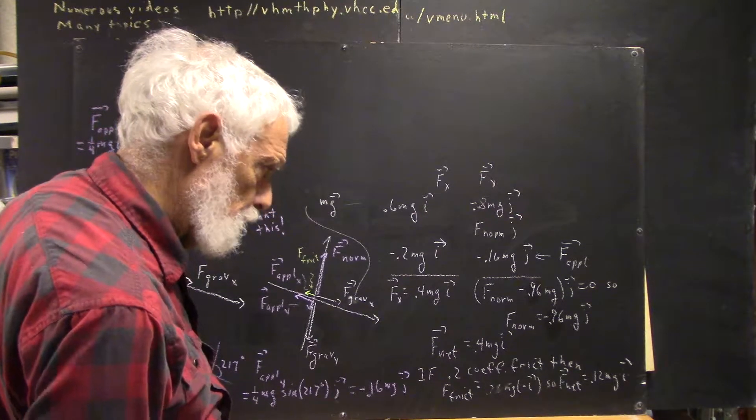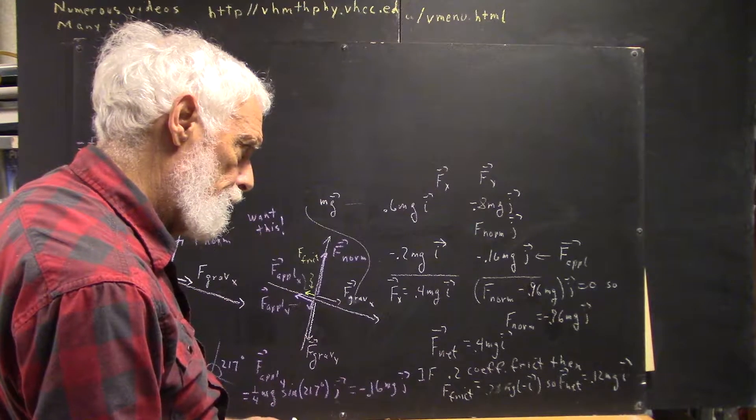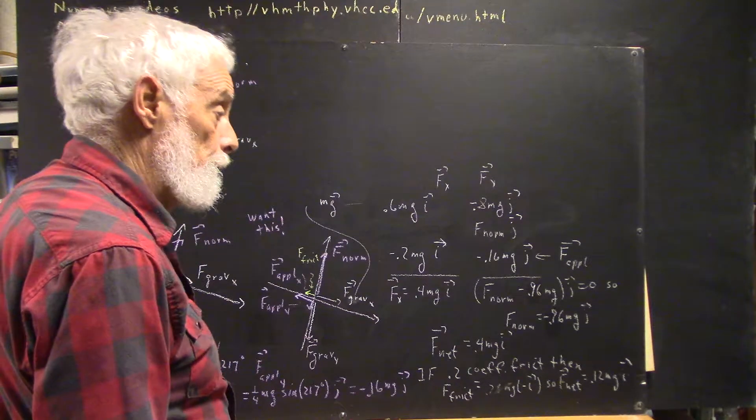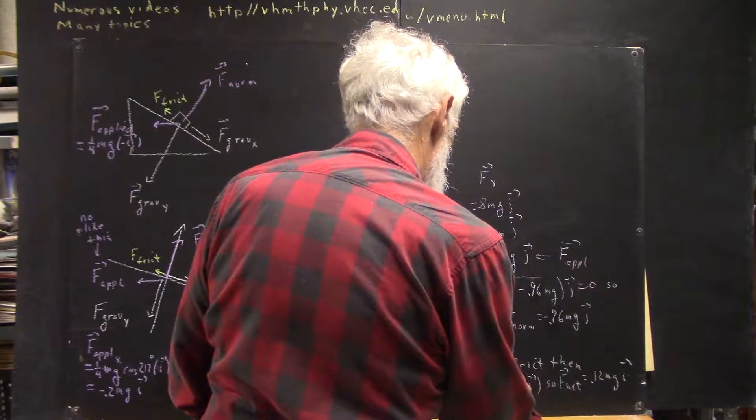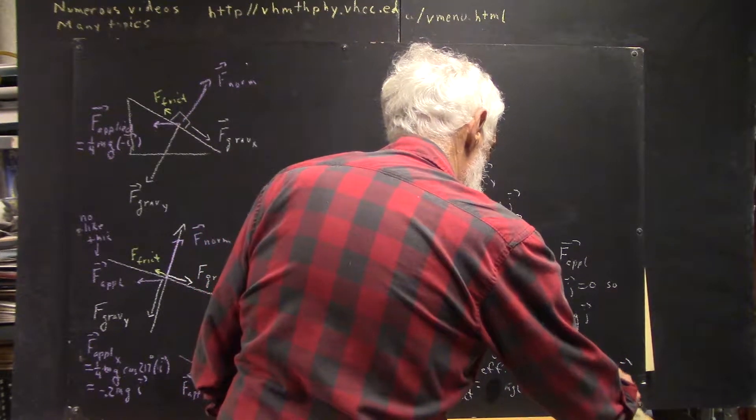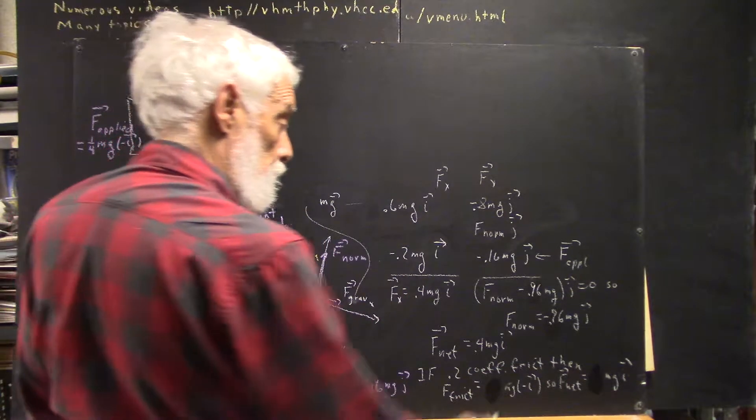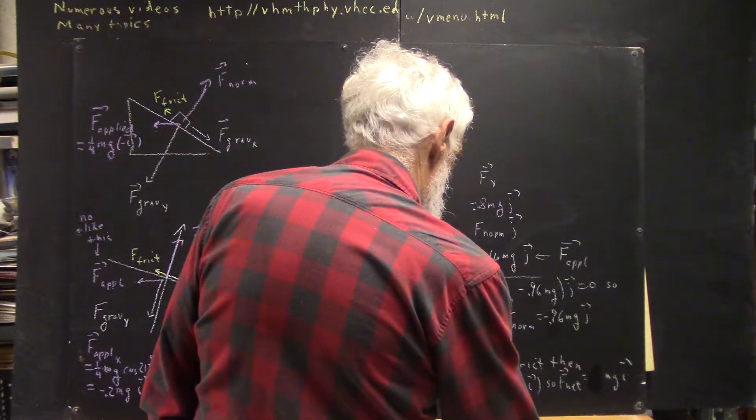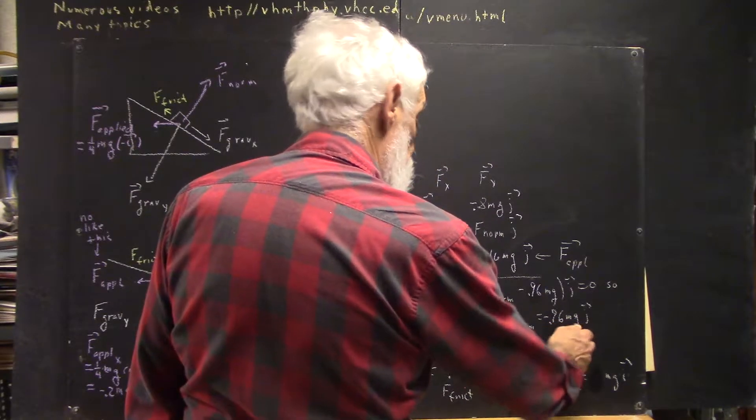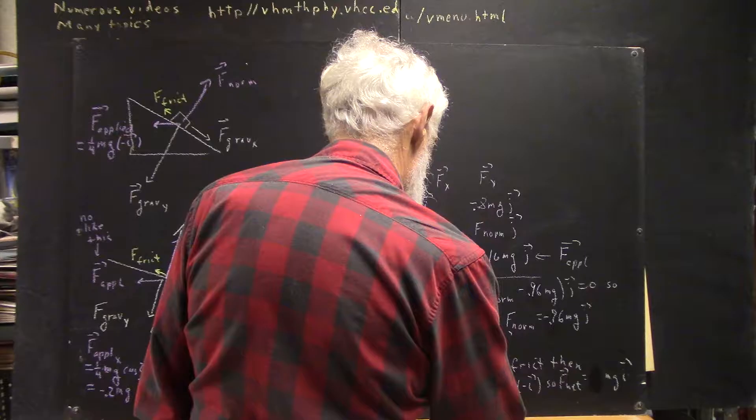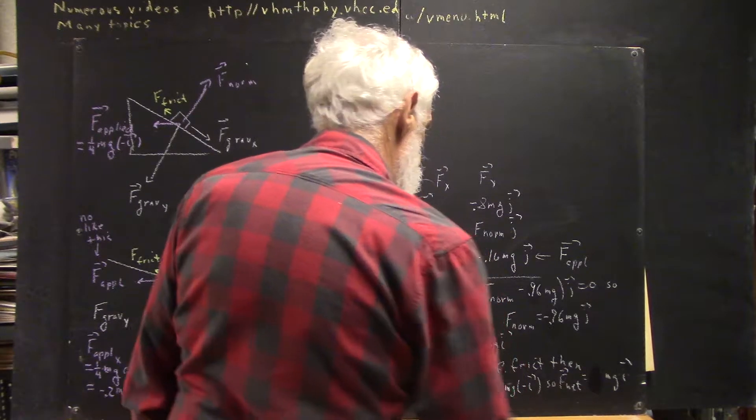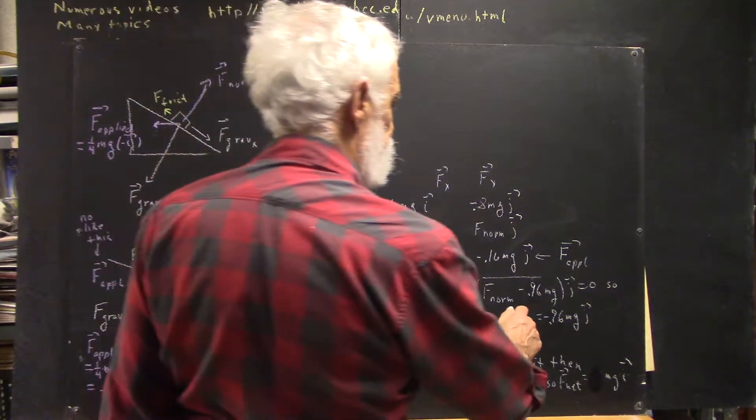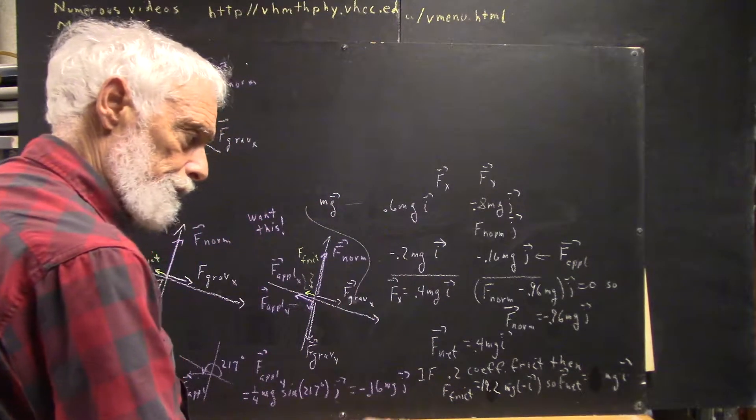And I don't know what 0.28 is doing there. Yeah, I do. And of course, it's wrong. The frictional force, if we had a coefficient of 0.2 or 20% of the normal force, well, 20% of this is 19.2 newtons. Or 19.2 mg in this case. Forgot that arrow there, that's important. Think about why.